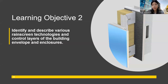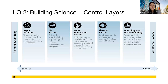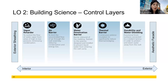Moving to learning objective two — essentially a crash course on building science, starting with the general control layers from our substrate. The substrate might be sheathing, existing masonry, CMU, or concrete. The five control layers — or four, depending on climate zone — are: vapor barrier, air barrier, water penetration barrier, thermal barrier, and durability and water shedding layer. We'll get into each of those.